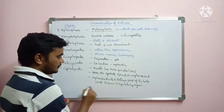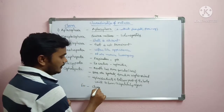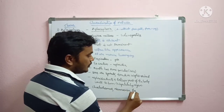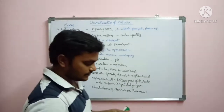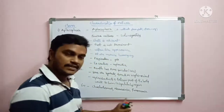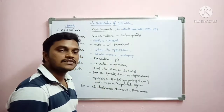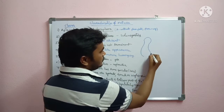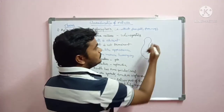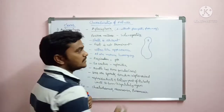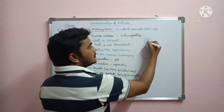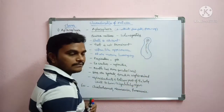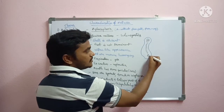Examples of Aplacophora are Chaetoderma and Neomenia. For Neomenia: the foot is absent, it is a worm-like organism. The mouth is located anteriorly and is surrounded by some sensory apparatus. There is a ventral foot groove — rudimentary but no prominent foot. A cloacal aperture is present in the posterior region.